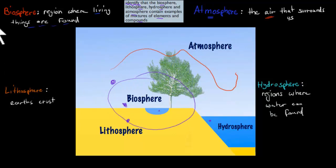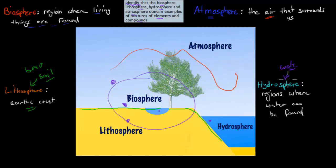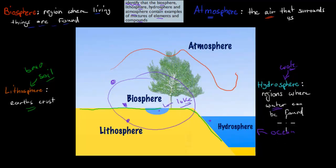The lithosphere is the Earth's crust — so more or less soil and all that kind of stuff, the beach — anything that is not the atmosphere or the water. And we've got the hydrosphere. Hydro means water, so this has to do with where water can be found: the ocean, a lake, or even underground water supply. These are all examples of the hydrosphere.